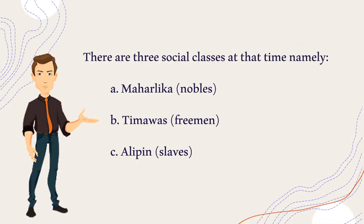Present also during the pre-colonial times was the system of stratification, which was deemed politically significant. This stratification was based on class, which included the nobility or Maharlika, the freemen or the Timawas, and the slaves or what we call as the Aliping Namamahay or Aliping Sa Gigilid. The Datu belonged to the Maharlika class. Women also played a pivotal role during this period as they held important positions in pre-colonial Philippine society. The pre-colonial system was already complex and sophisticated such that foreign relations were already established as early as this period.